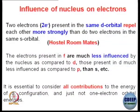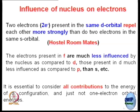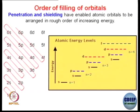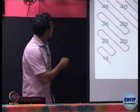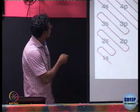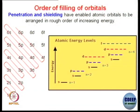So when you are trying to understand any effect produced by these different electrons, you have to think of the bigger picture — how penetrating they are, how much repulsion they will have with each other, and so on. We will come to that. Now I will discuss the order of filling of orbitals.